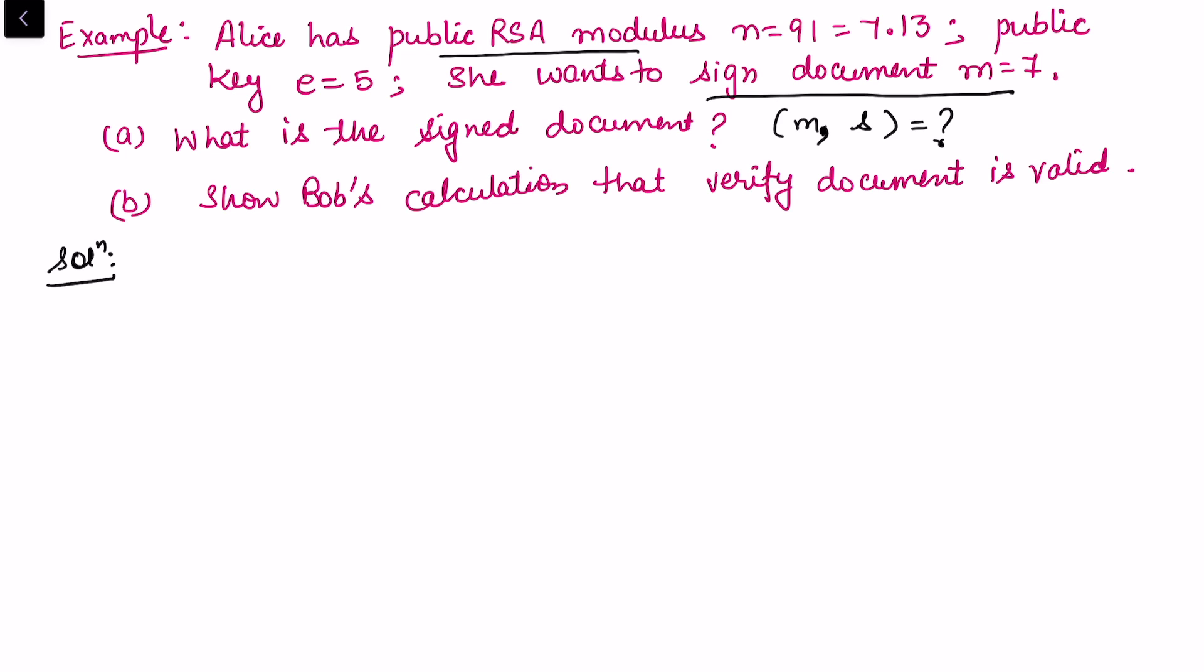For the signature, let's look at the public information: n is 91 and e is 5. We must need to know what is d. d can be calculated from ed is congruent to 1 mod phi(n). So e is 5, 5d is congruent to 1 mod 6 times 12, that is 72. From here we can use extended Euclidean algorithm to calculate d equals 29. So d is 29.